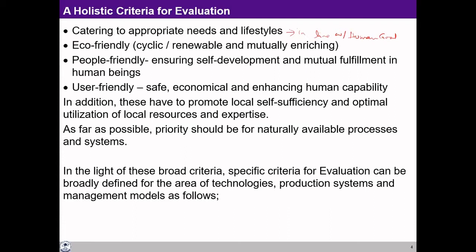To make it more focused, we say it has to be eco-friendly — meaning mutually fulfilling for the rest of nature. All the orders of nature, be it the physical order, the bio order, or the animal order, it has to be fulfilling for them. When we interact with the rest of nature through these production systems and technologies, we have to make sure they are enriching for the rest of nature as well as for human beings — essentially cycling, renewable, and mutually enriching.